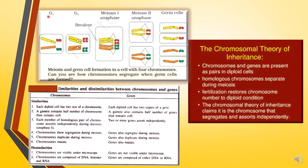We know that interphase has three phases: the G1 phase, then the S phase where replication takes place and the number of chromosomes gets doubled, and the G2 phase. After G2, meiosis one begins. In meiosis one anaphase, the homologous chromosomes get segregated. In meiosis two anaphase, they are further divided into two daughter cells. So from a single cell we get four daughter cells — four gametes — which transfer characters from parent to offspring.